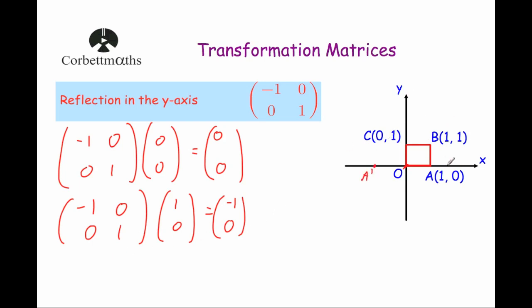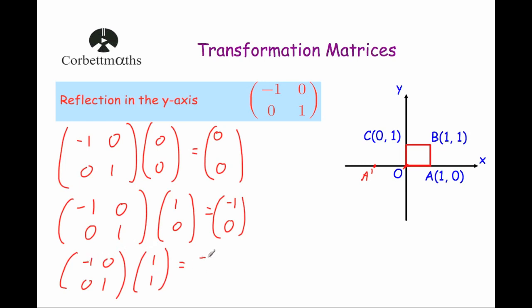Next, the point B, which is 1, 1. So it's going to be minus 1, 0, 0, 1, and we're going to multiply it by the point 1, 1. And when we do that, we get minus 1 times 1 is minus 1, 0 times 1 is 0, adding them together will be minus 1.